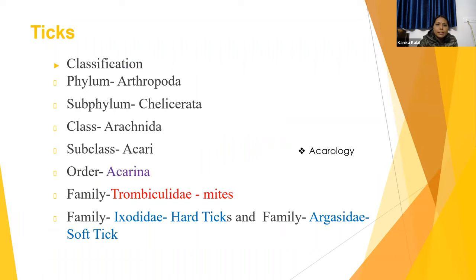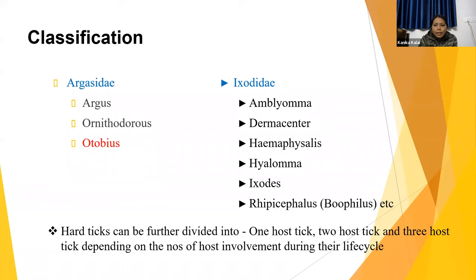Ticks and mites are classified under phylum Arthropoda, subphylum Chelicerata, class Arachnida, and subclass Acari. They are termed Acariens as they come under the order Acarina. Mites come under the family Trombiculidae. Ticks are divided into two types: hard ticks (family Ixodidae) and soft ticks (family Argasidae). In the Argasidae family, the important genus for small ruminants and mammals is Otobius, while Argas and Ornithodoros are important for poultry birds.